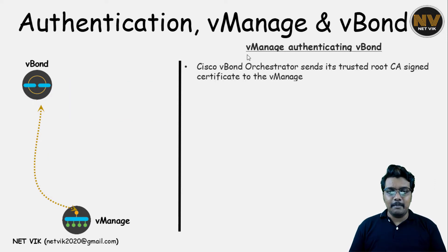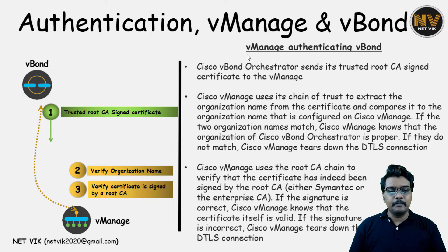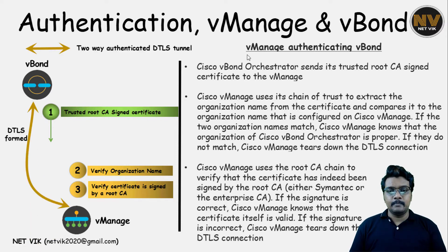Next, vManage authenticates the vBond. vBond sends the trusted root CA signed certificate. vManage will verify the organization name and also check the signed certificate itself. When this is successful as well, bi-directional authentication is complete, meaning we are good to form a permanent dateless tunnel.